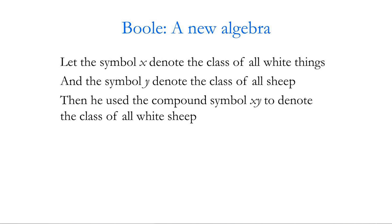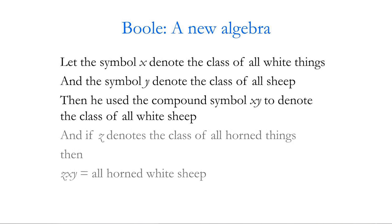Now in the Laws of Thought, he approached logic in a new way. This is a new way of looking at logic, reducing it to a simple algebra, incorporating logic into mathematics. He did this by applying algebraic operations on entities that had not previously been thought of as part of mathematics. These entities were classes of objects with particular properties. For example, he wrote: let the symbol x denote the class of all white things, let the symbol y denote the class of all sheep. Then he used the compound symbol xy to denote the class of all white sheep. We now think of it in terms of set theory, where we interpret xy as the intersection of the set of white things with the set of sheep. And he continued: if z denotes the class of all horned things, then zxy is all horned white sheep.